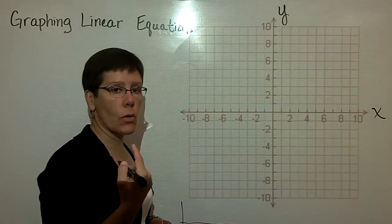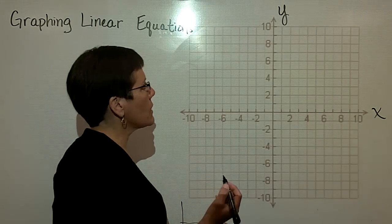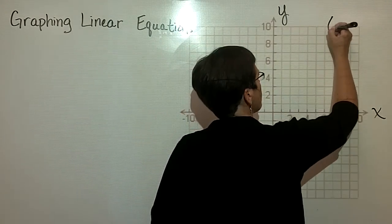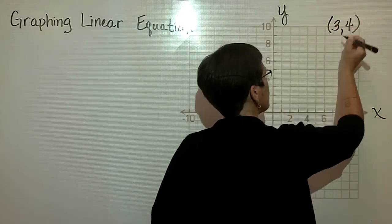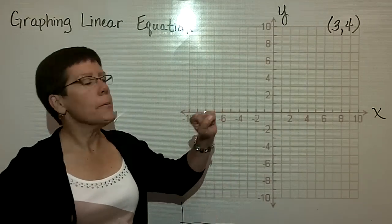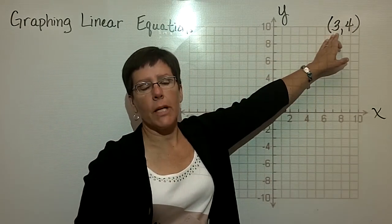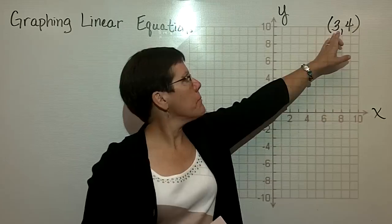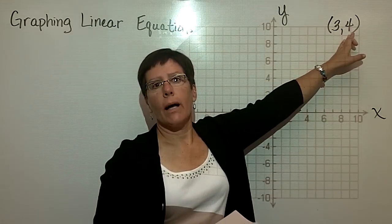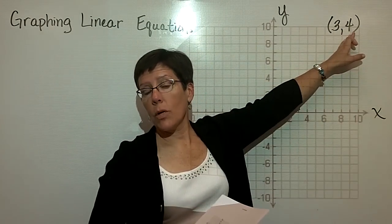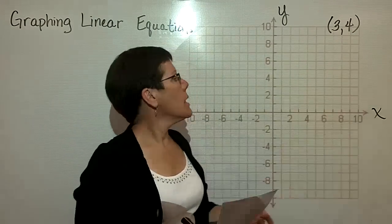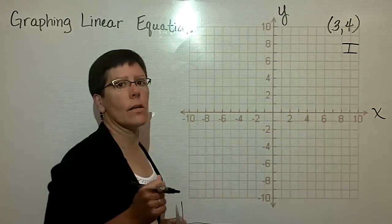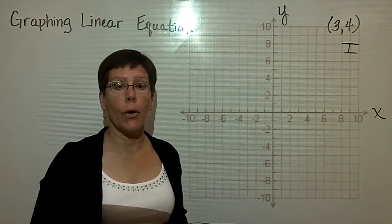I'm going to write an ordered pair and show you where it's located in the rectangular coordinate system. That is called an ordered pair, and the first value — which is 3 — represents an x value of 3. The second value in the ordered pair represents y, so I would like to represent a y value of 4. This area right over here is called the first quadrant, where both x and y are positive.